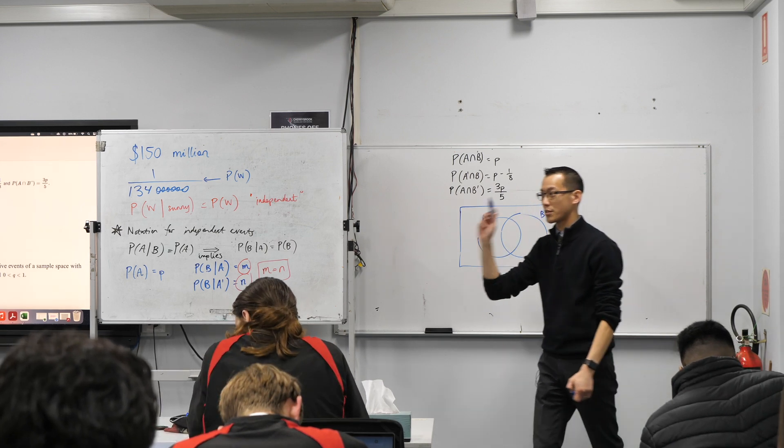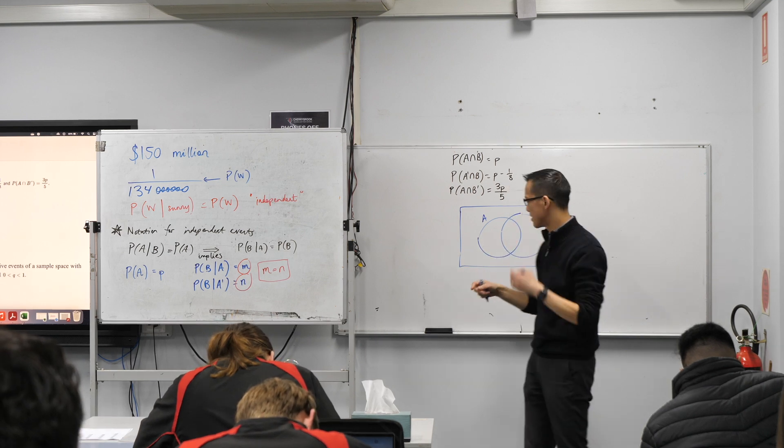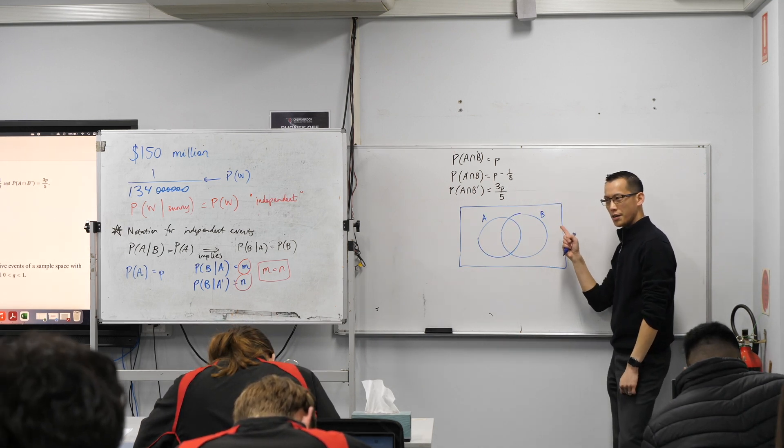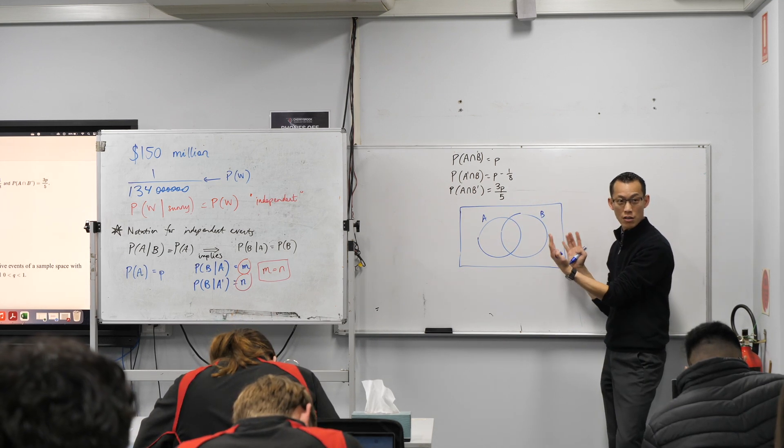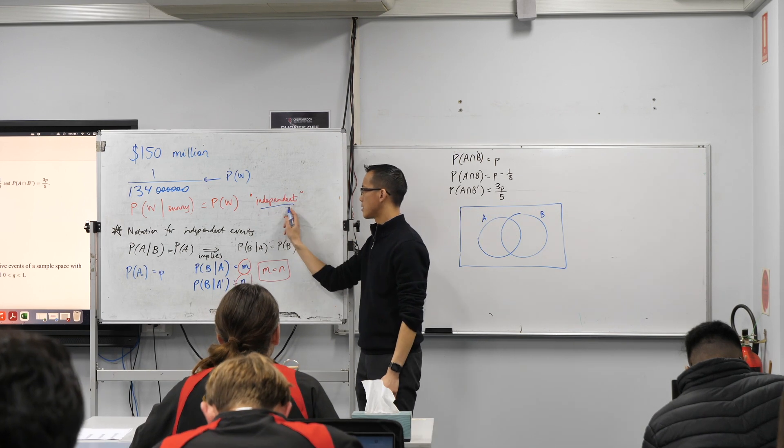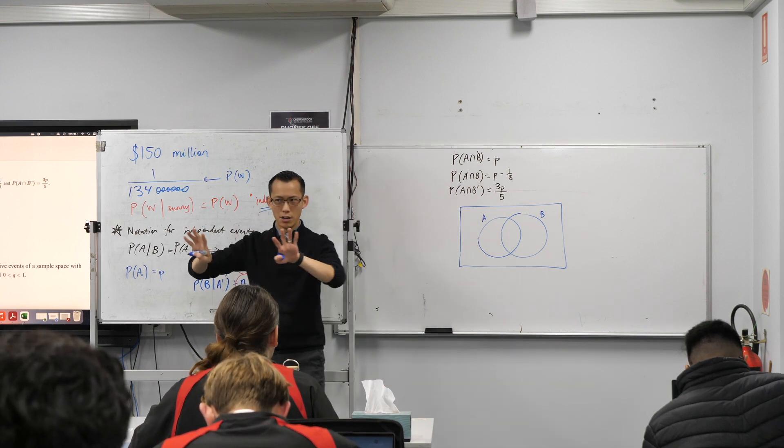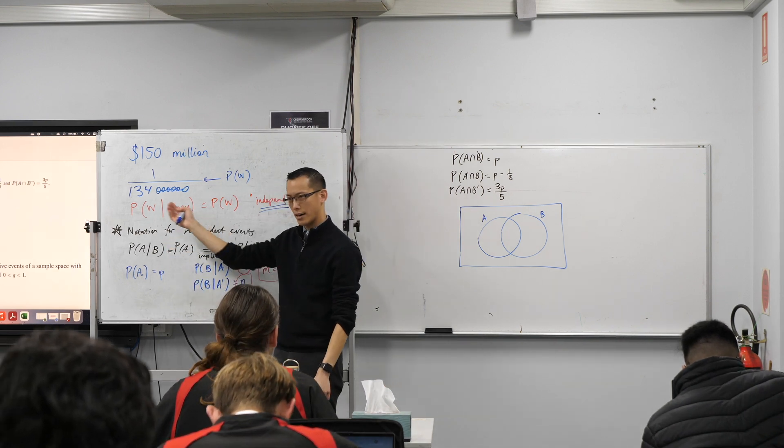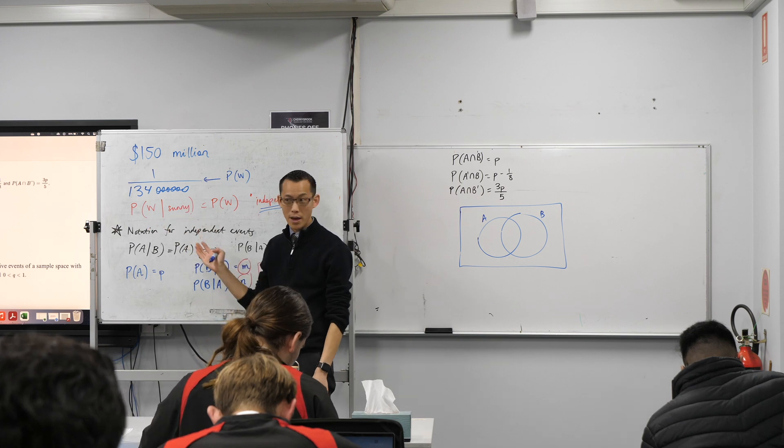Now, I want to address a question that a few of you I heard murmuring about, right? Which is, like I've drawn the two circles in my Venn diagram, so they're overlapping. And some of you are saying, whoa, whoa, whoa, hold up. Independence doesn't mean they're like not to do with each other, like winning the lottery and sunny weather.